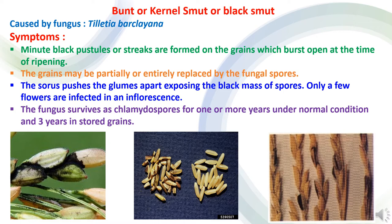Bunt disease, or kernel smut or black smut of rice, is caused by the fungus Tilletia barclayana. Minute black pustules or asterisks are formed on the grains, which burst at the time of ripening. The grains may be partially or entirely replaced by fungal spores. The spores push the glumes apart, exposing the black mass of spores. Few flowers in an inflorescence are infected, impacting quality. The fungus survives as chlamydospores for one or more years under normal conditions and up to three years in stored grains.